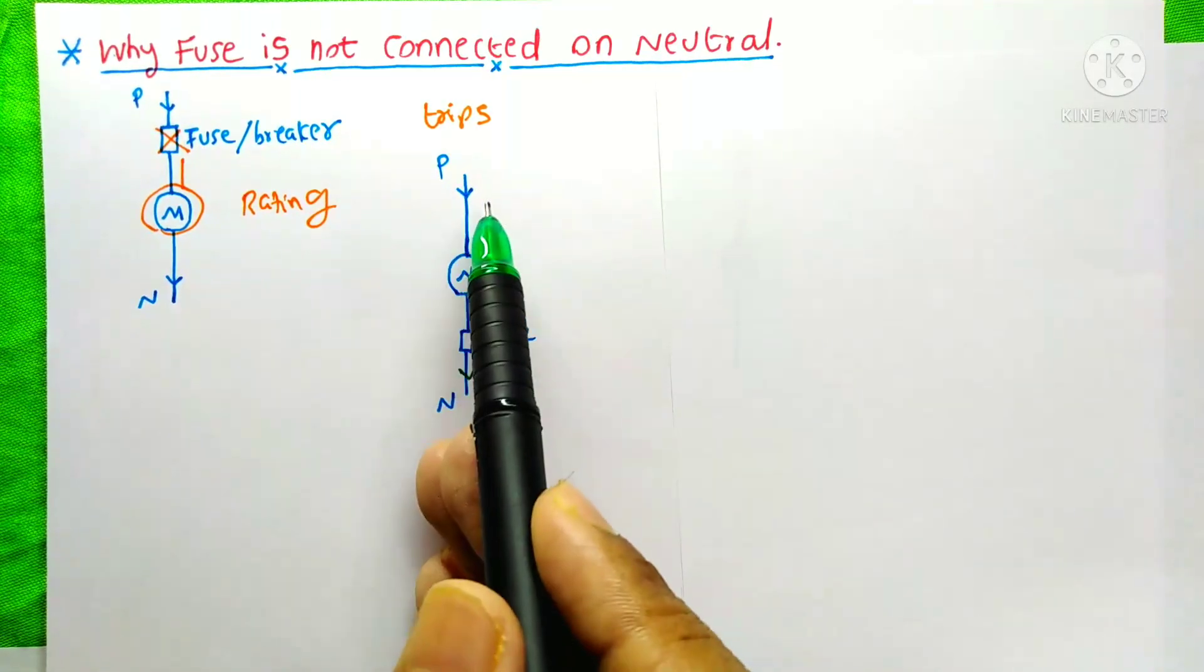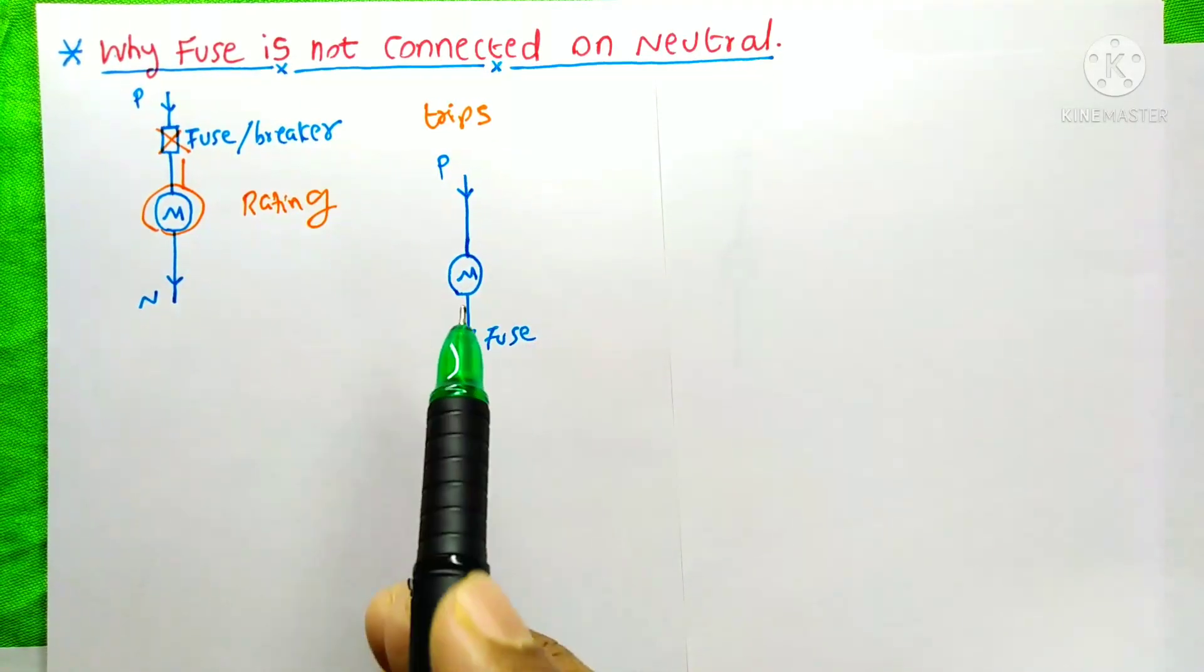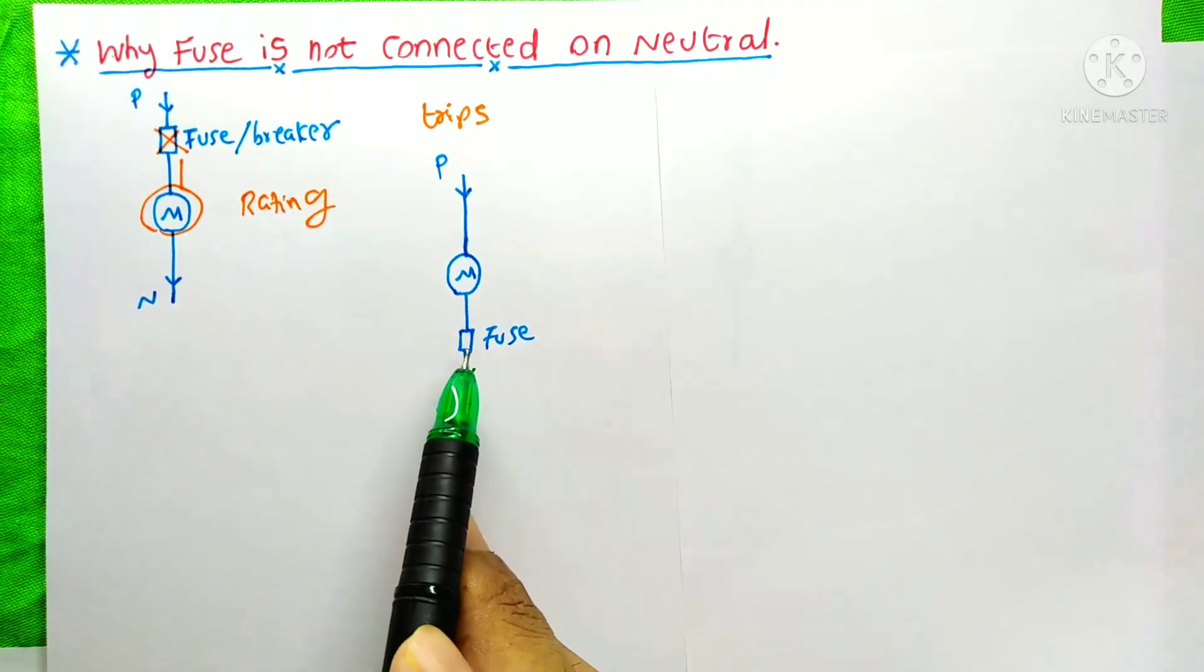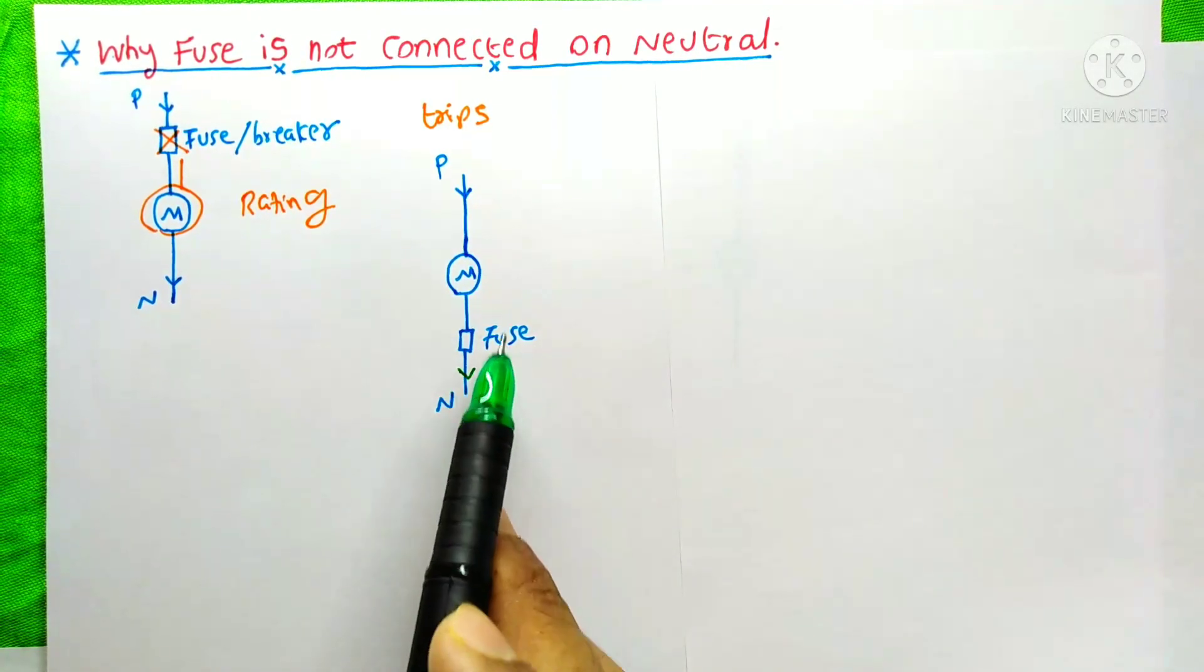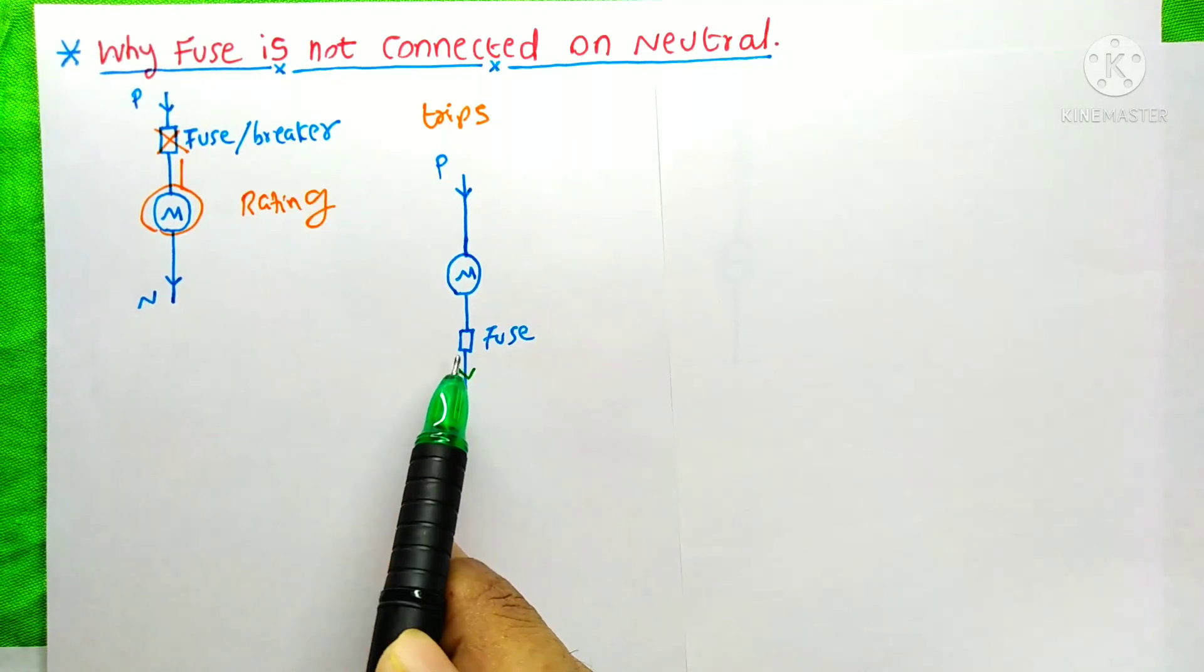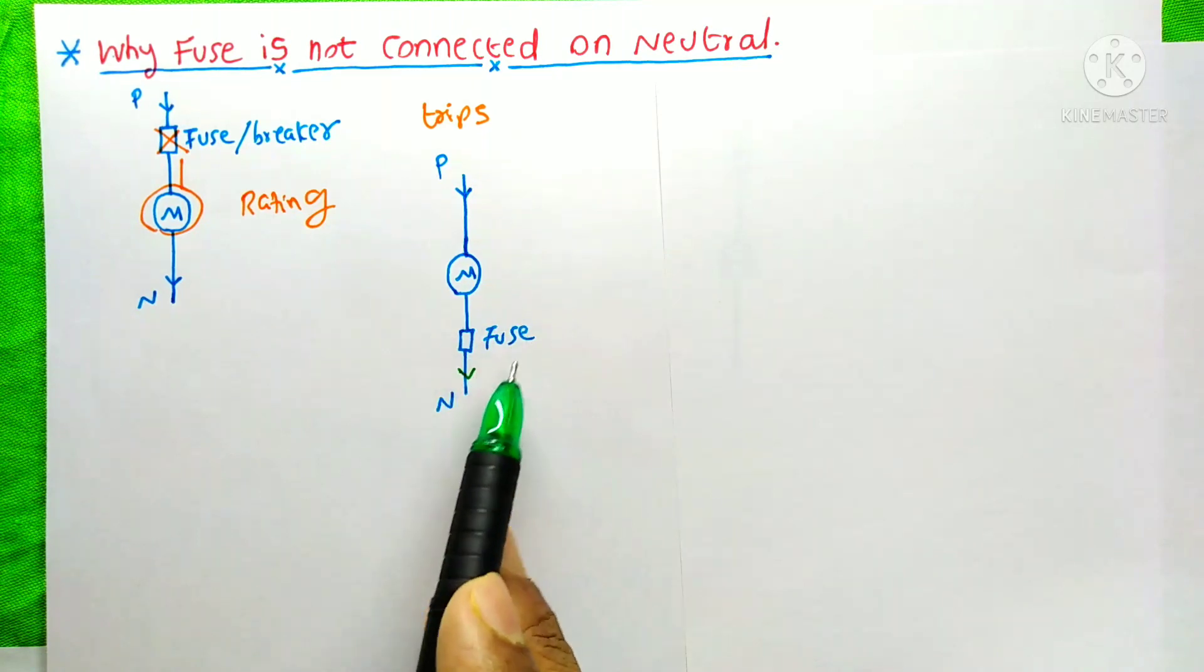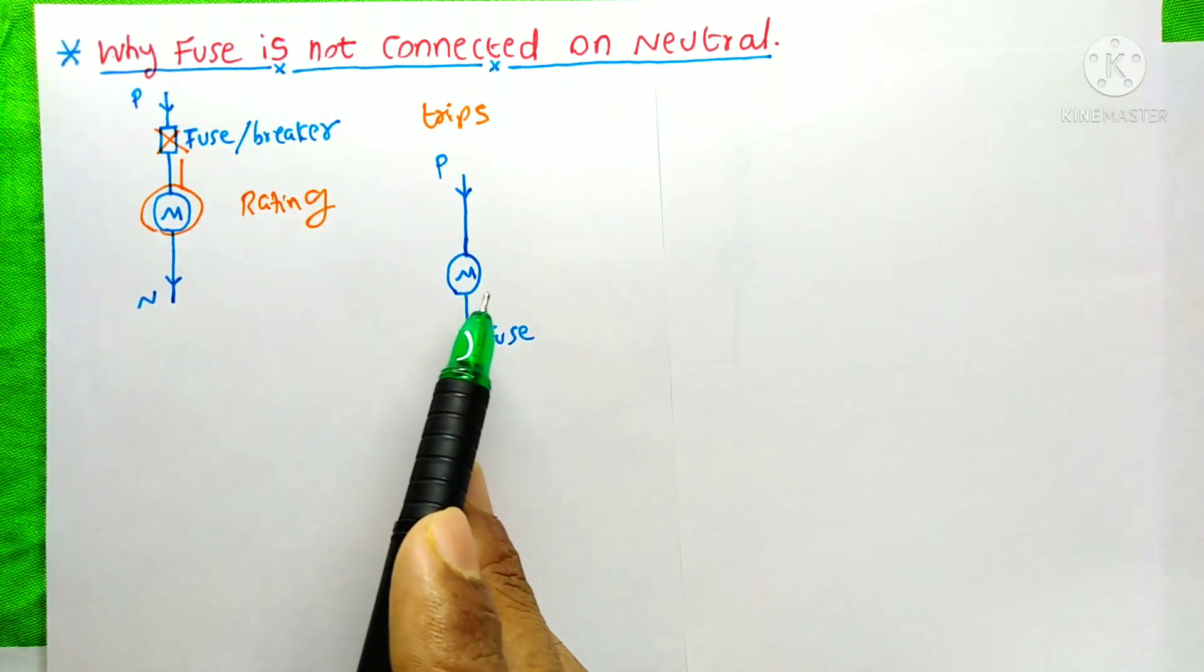And the phase will allow more current to the motor and the motor gets damaged. And here also we connected a fuse according to the rating of this motor. When the high current flows through this fuse on the neutral, the fuse will be blown. But it can't protect the motor from its damage.